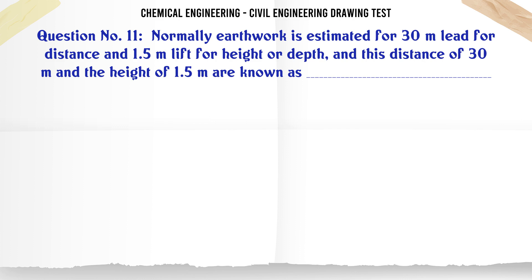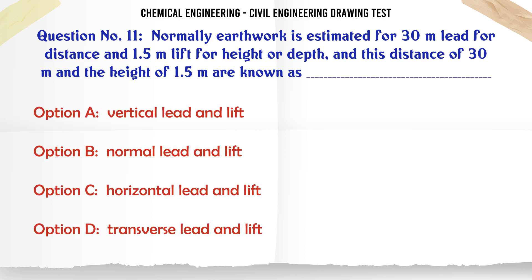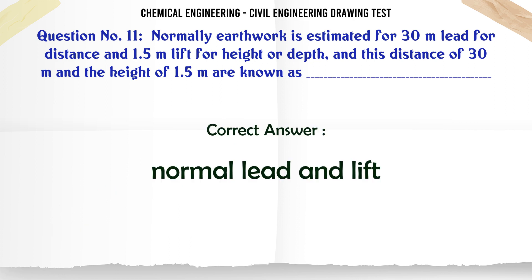Normally earthwork is estimated for 30 m lead for distance and 1.5 m lift for height or depth and this distance of 30 m and the height of 1.5 m are known as. A. Vertical lead and lift. B. Normal lead and lift. C. Horizontal lead and lift. D. Transverse lead and lift. The correct answer is Normal lead and lift.